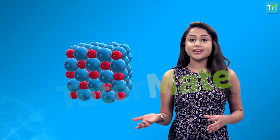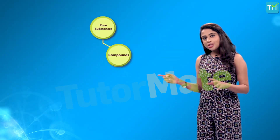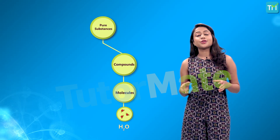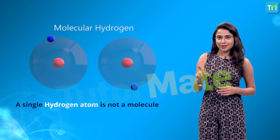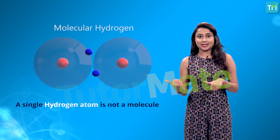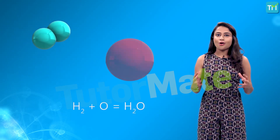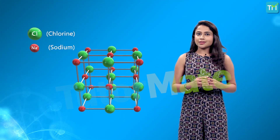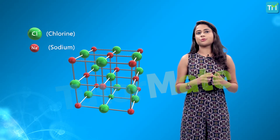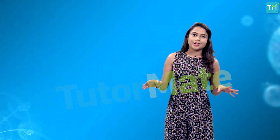Molecules of compounds are formed when atoms of different elements join together in definite proportions. As you can see, H2O molecules are molecules of compounds, whereas O2 molecules are molecules of elements. A single hydrogen atom is not a molecule; when it bonds to another hydrogen atom, molecular hydrogen is formed. When two hydrogen atoms and one oxygen atom bond together, H2O — water — is formed. Common salt is a compound of sodium and chlorine, where sodium is a positively charged particle and chlorine is a negatively charged particle, and each of them is called an ion, which brings us to our next topic: ions.